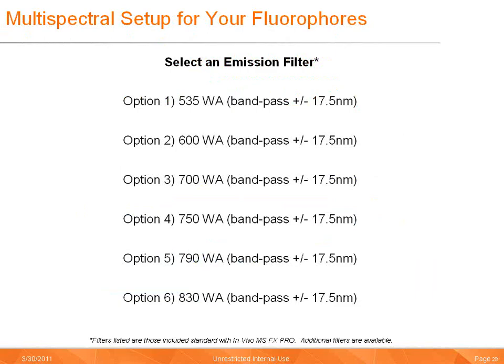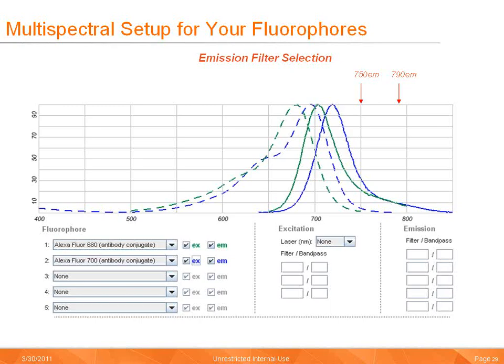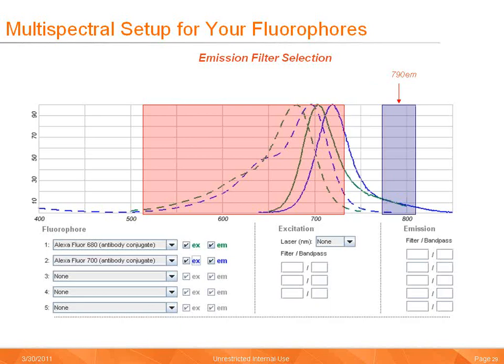Next, we'll select the appropriate emission filter for our acquisition. There are a total of six emission filters that come standard with the multispectral FX, each with a 17.5 plus/minus nanometer bandpass. Referencing the profiles for the fluorophores, the available emission filters are shown in red. We can immediately exclude those not within a reasonable range of the peak emissions of either fluorophore — this eliminates 535, 600, 700, and 830. Remember that we selected the 720 nanometer filter as the longest wavelength excitation filter, so we must consider the bandpass and possible overlap with emission filters. This would potentially overlap with the 750 nanometer emission filter bandpass. So we'll exclude the 750 nanometer emission filter and select the 790 nanometer emission filter for this setup.